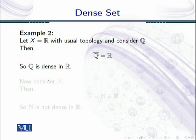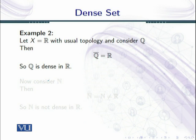Now let us see Example 2: the real line with the usual topology. The usual topology on R is the collection of all open sets and their unions. Consider the set of rational numbers Q. We have already seen that the closure of Q is R — every real number is a closure point of Q. So the closure of Q equals R, which implies that Q is dense in R.